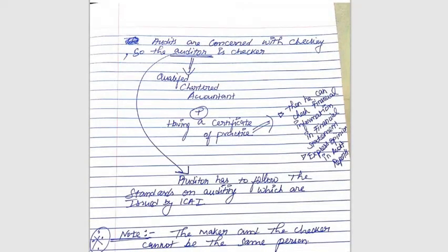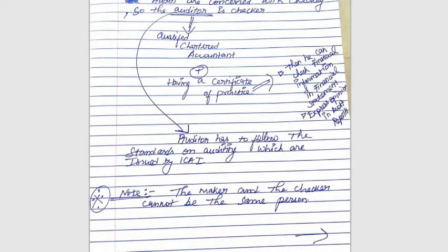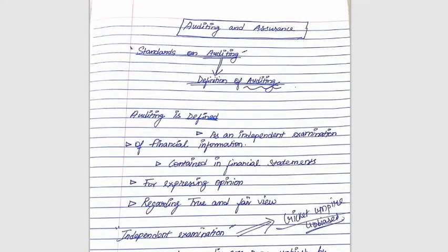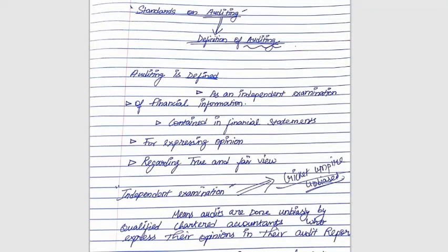To check the financial statements, the auditor must also follow the Standards on Auditing issued by ICAI. Critically, the maker — the person who prepares the financial statements — and the checker — the person who audits them — cannot be the same person. It would not be fair if someone made the financial statements and then reviewed their own work. So the maker and checker must always be different people.